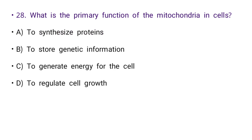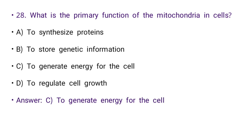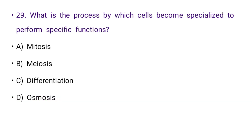Next: What is the primary function of mitochondria in the cell? Options: to synthesize protein, to store genetic information, to generate energy for the cell, or to regulate cell growth. The right answer is C: to generate energy for the cell.